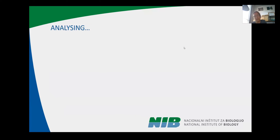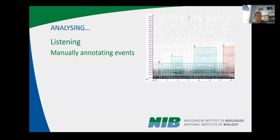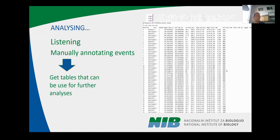After the recording came a long processing and analysis stage — listening to these recordings and annotating the events on the recordings. On the spectrogram, we annotated every event and categorized all these events into different categories. The largest category was so-called vibrotypes. After this was done, we got very large tables and used them for further analysis.